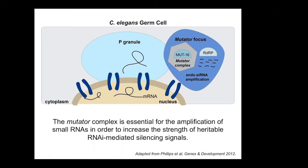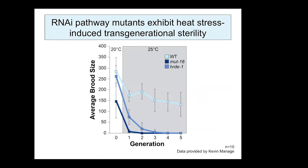The amplified small RNAs are then loaded into different Argonaute proteins to ultimately either transcriptionally or post-transcriptionally silence target transcripts. Without this mutator complex-mediated amplification step, RNAi-mediated silencing is ineffective, and loss of functional MUT-16 protein leads to an RNAi-defective phenotype. Additionally, other RNAi pathway factors, as well as MUT-16, exhibit a temperature-sensitive sterility phenotype when grown at elevated temperatures, with each factor reaching sterility at different generations after a progressive generational decline in brood size — termed a mortal germline phenotype.